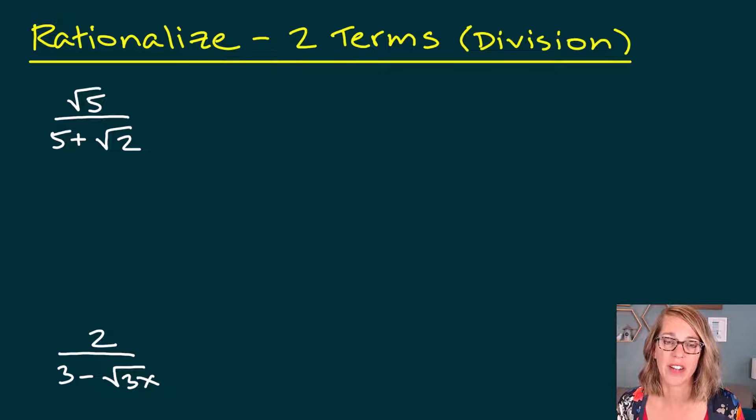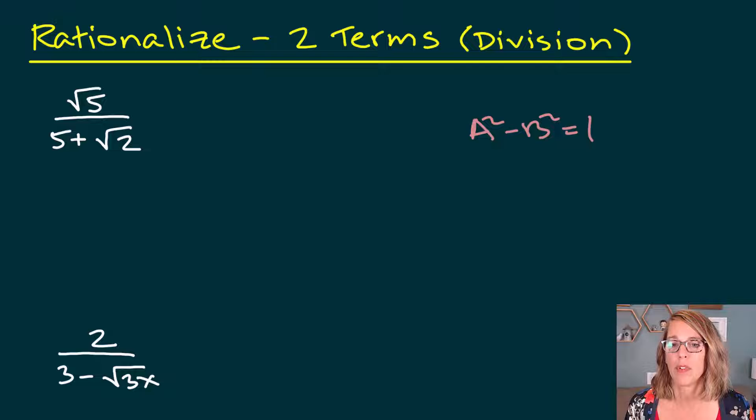We are going to rationalize denominators, or divide, when we've got two different terms in that denominator. Our goal is actually to get a difference of squares, so our goal is to get an a squared minus b squared, which we can get by multiplying a sum times a difference, a plus b times a minus b. So we are going to multiply by the conjugate, and the conjugate just changes the sign.